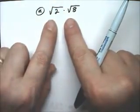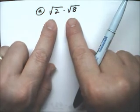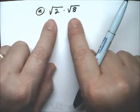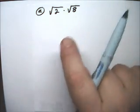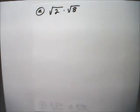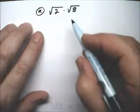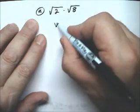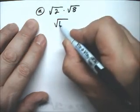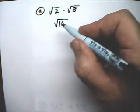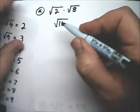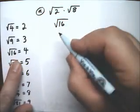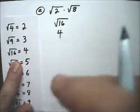Here I have the square root of 2 times the square root of 8. Similar to the way I was able to split them in the last example, in this example I can put them together. So this becomes the square root of 16. And the square root of 16 is 4, so that answer simplifies to 4.